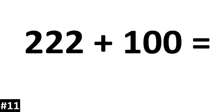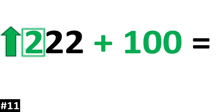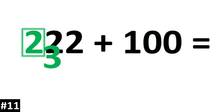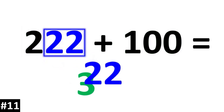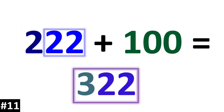222 plus 100. The hundreds digit of 2 is going to go up by 1, so that 2 is going to become a 3. The other numbers stay the same, and we have 322.